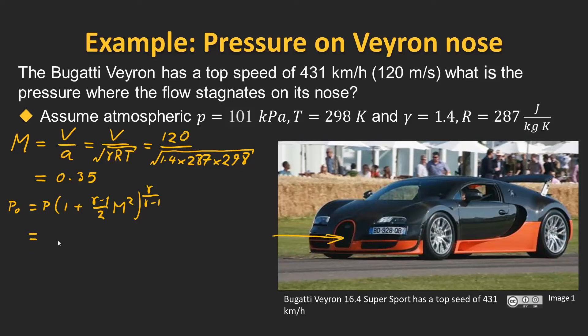So the atmospheric pressure, which is our static pressure in this case, is 101 kPa, and then we've got our 1 plus gamma minus 1, which is 1.4 minus 1 in this case, over 2 times our Mach number 0.35 squared, and then this is to the power of 1.4 divided by 1.4 minus 1. Plugging this into our calculator once again, we're going to find that the stagnation pressure against the nose of the Veyron is 110 kilopascals.